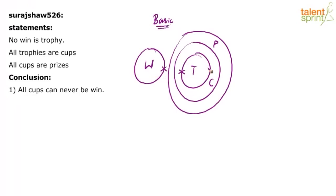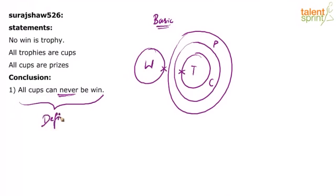Now look at the conclusion: all cups can never be win. 'Never' means throughout — it is a definite conclusion. If you are confused about whether this is a possibility conclusion or a definite conclusion, it is clearly a definite conclusion because the speaker is stating it as a fact: all cups can never be win. We have to check whether it follows or not.